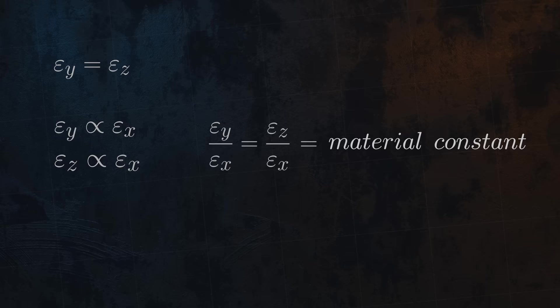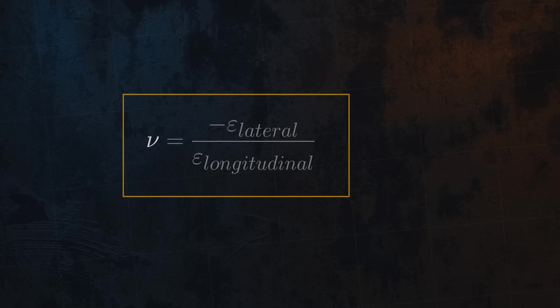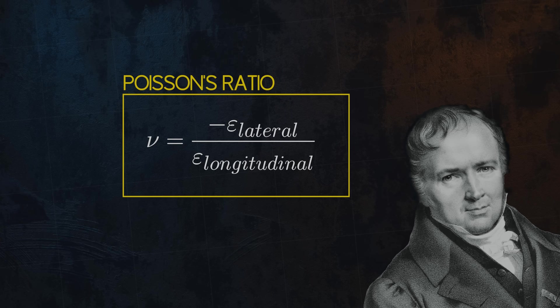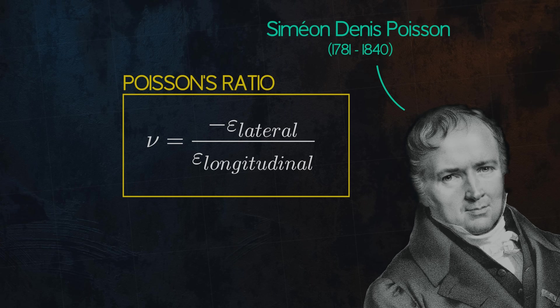You might have guessed it by now, but we denote this material constant with the Greek letter nu, and we call it Poisson's ratio. By the way, Poisson's ratio is named after this guy, Simeon Denis Poisson, the famous French mathematician who formally defined the ratio in a note published in 1827.